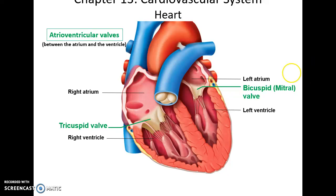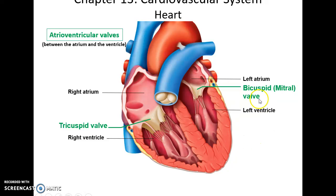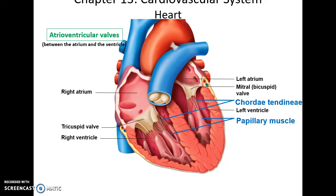There are four valves in the heart. Two of these are atrioventricular valves: between the right atrium and the right ventricle is the tricuspid valve, and between the left atrium and the left ventricle is the bicuspid valve, also known as the mitral valve. The tricuspid has three cusps or flaps, and the bicuspid has two. The flaps are connected to the heart walls by little pieces of connective tissue called chordae tendineae, like little strings attaching them to the papillary muscles, which contract when necessary.